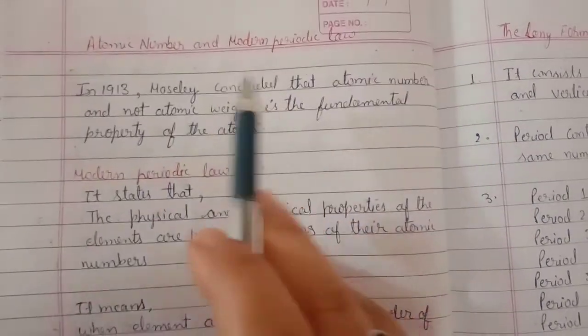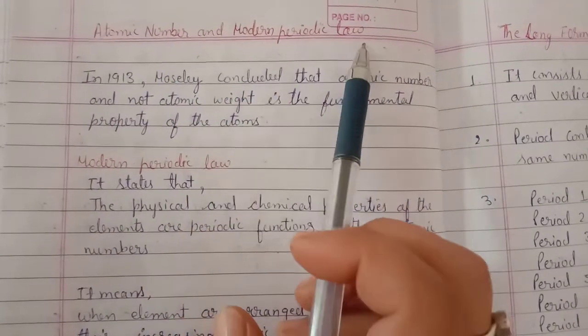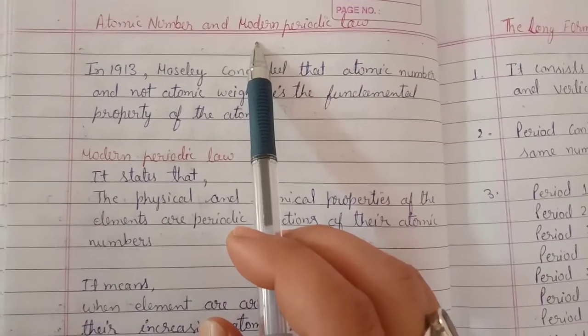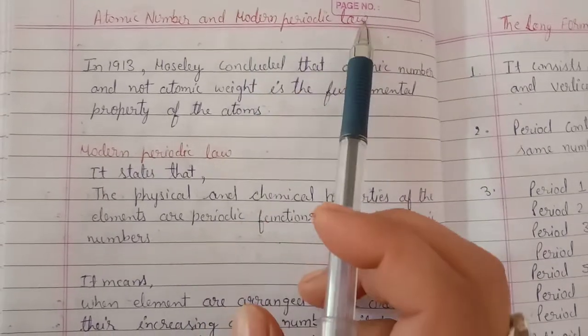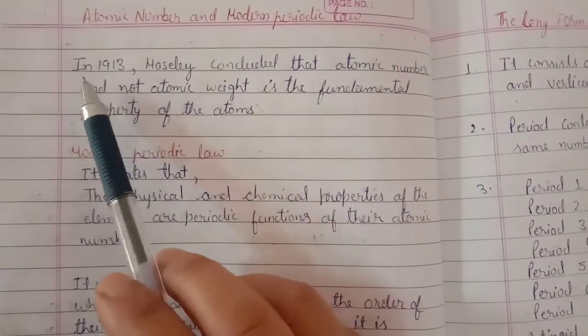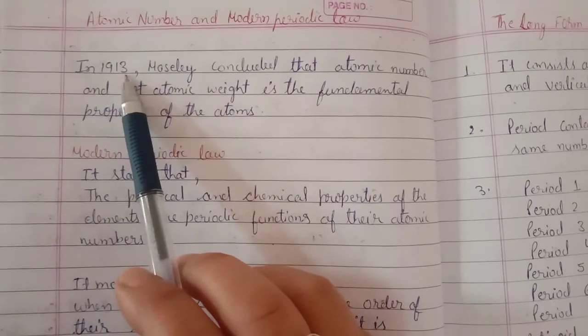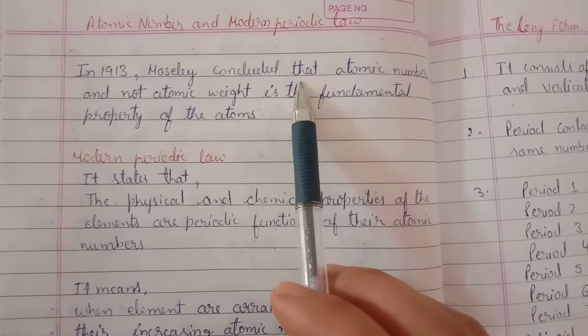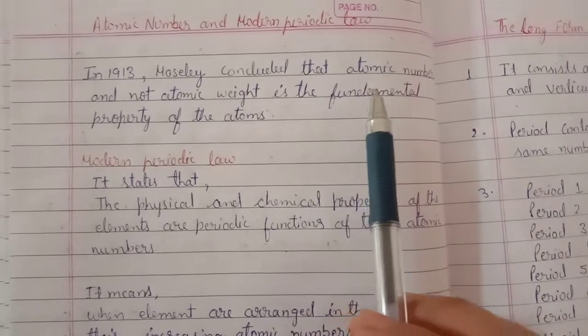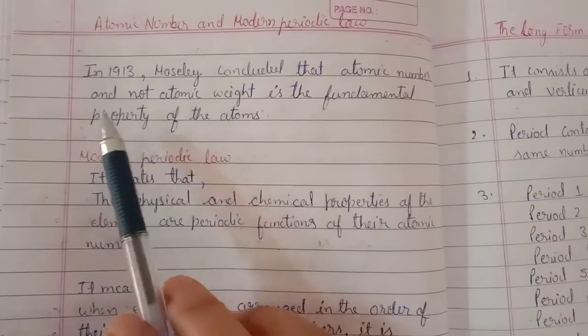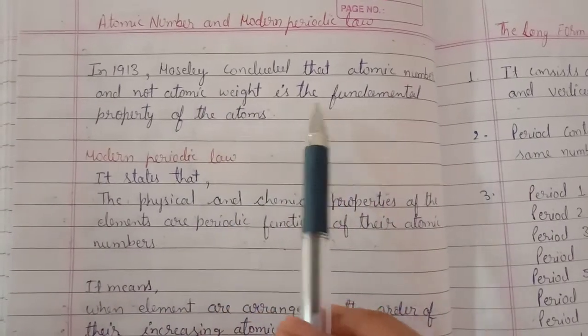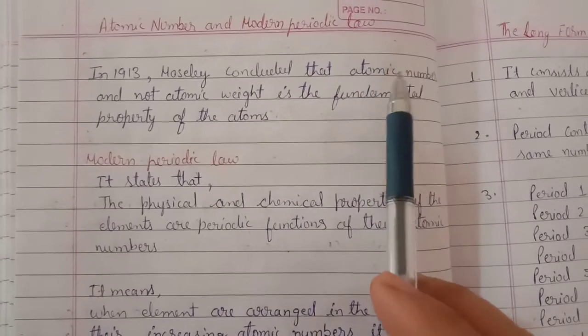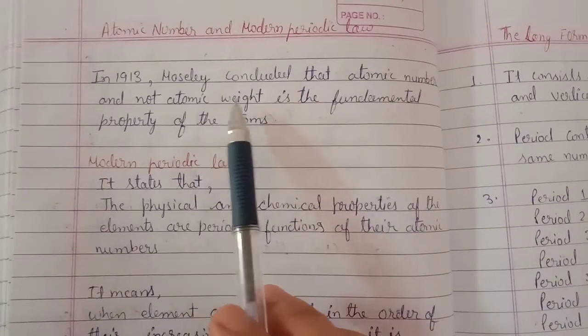Hello everyone, our next topic is the modern periodic law. Mendeleev's periodic table was discarded when the modern periodic law came. It was given by Moseley in 1913. He performed an experiment from which he concluded that atomic number, and not the atomic weight, is the fundamental property of the atom.